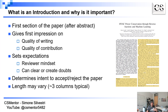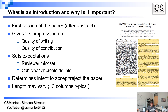If you give a bad impression in the introduction, it's very unlikely that the reviewer is going to change their mind going further into the paper. At the same time, you really want to give the reviewer most of the information in the introduction so that they know what to expect, they don't have doubts, and everything they expect is eventually going to be delivered. In terms of length, it depends on the venue, but generally three columns is typical.